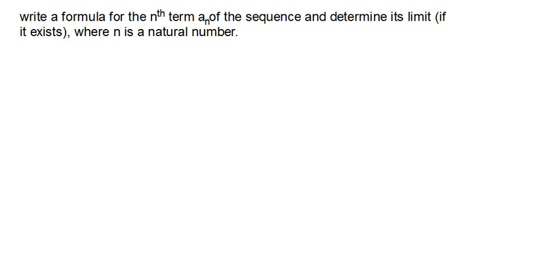So, we go through another example of an infinite sequence. Let's say we are given a sequence in this manner, where we have 2 over 4, then 4 over 5, then 6 over 6, then 8 over 7, then 10 over 8. We have to find the formula for the nth term of the sequence and determine its limit if it exists, where n is a natural number.